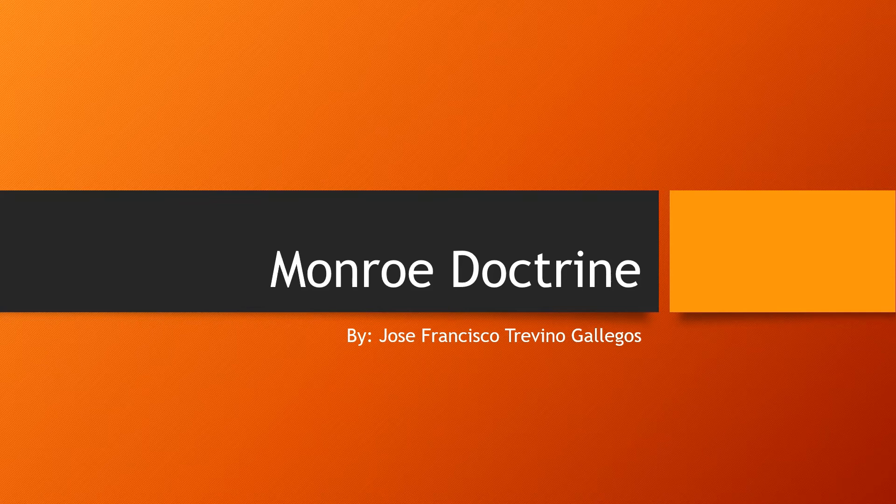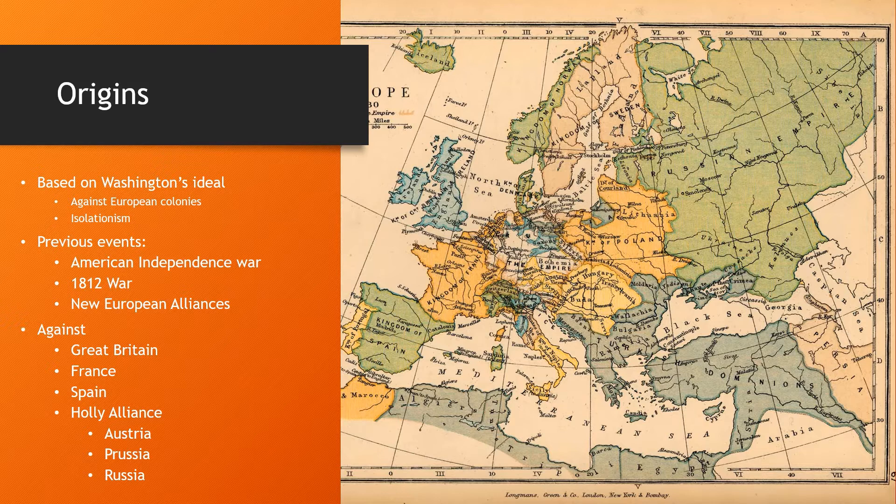Hello, my name is Jose Francisco Treviño Gallegos and I am going to talk about the Monroe Doctrine. The Monroe Doctrine is one of the doctrines that established the American ideals in the region and later on around the world. Based on George Washington's ideal about fighting against imperialistic European powers in the area and his idea of isolationism of the American state, these ideas helped to structure the Monroe Doctrine.